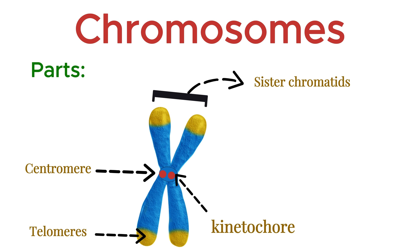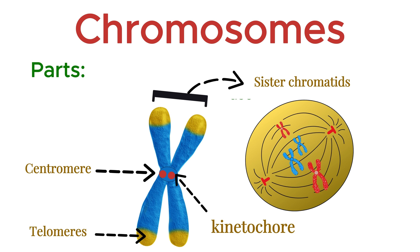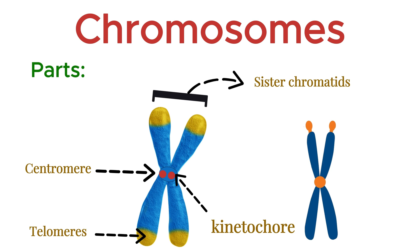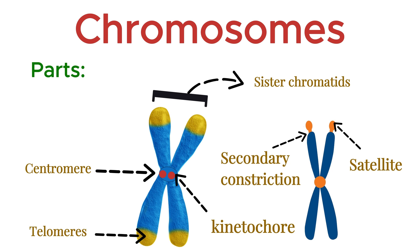Here is the kinetochore — a protein structure that forms on the centromere during cell division. It serves as the attachment point for spindle fibers, ensuring accurate separation of chromatids. Satellite is a small segment of a chromosome separated from the main body by a secondary constriction. It often contains genes for ribosomal RNA and plays a role in nucleolus formation.